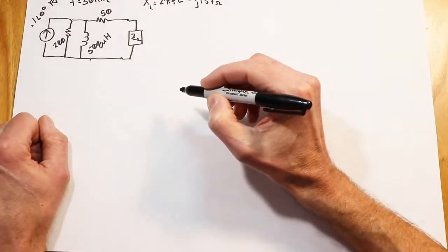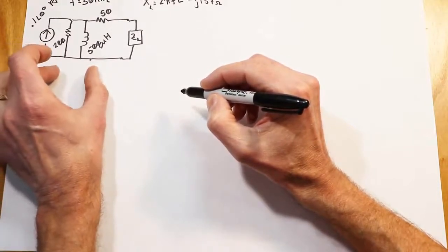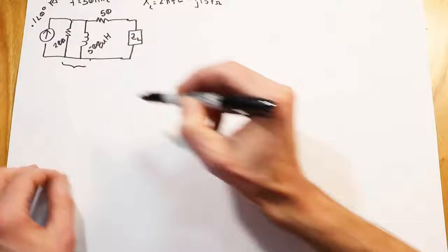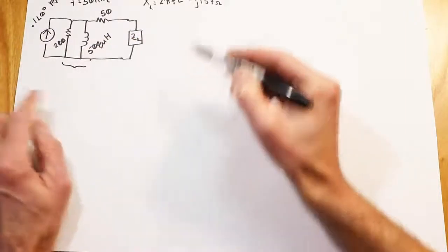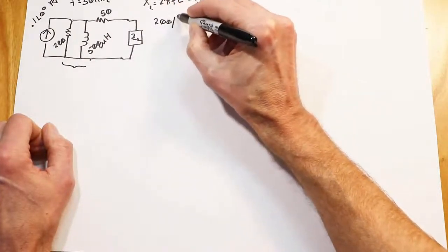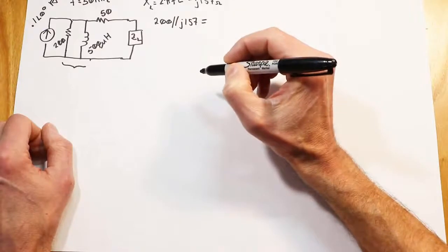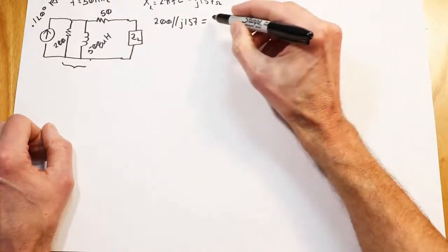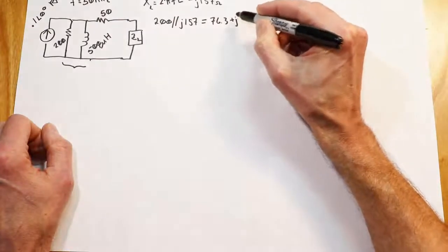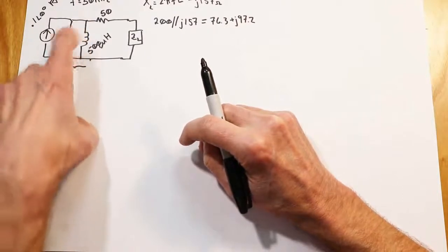Now, let's take a look at the Thevenin value here. First thing I want to do is figure out the value for these two components. What is 200 in parallel with the J157? We're going to need that for a couple of different things, actually. So that happens to work out to 76.3 ohms resistive plus J97.2. So that's what this pair happens to be.